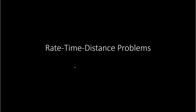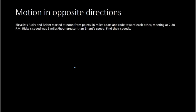First, dealing with motion in opposite directions. We have bicyclists Ricky and Bryant, starting at noon from points 50 miles apart from each other, and then rode towards each other, meeting at 2:30 p.m. Ricky's speed was 3 miles per hour greater than Bryant's speed. The question is asking us to find their speeds. The first thing you want to do is draw a sketch to help visualize what is happening. So here we have Ricky and Bryant starting 50 miles from each other and going towards each other — Ricky going to the right, Bryant going to the left — and they're going to meet somewhere in the middle. This entire distance is 50 miles.